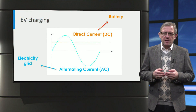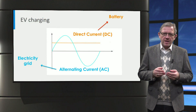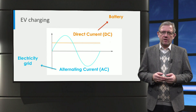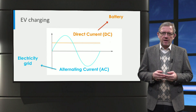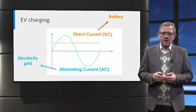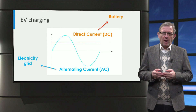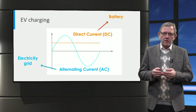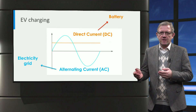In the electricity grid, the electric power is alternating current, or AC, by nature. However, the electric power of a battery is direct current, or DC, by nature. Hence, to charge an electric car from the AC grid, the power has to be converted from AC to DC.